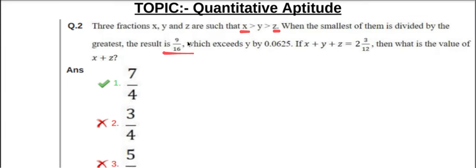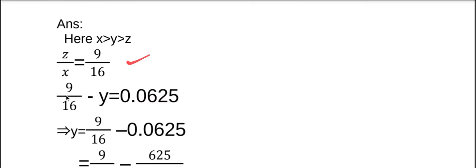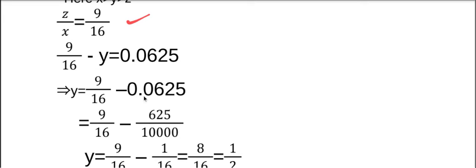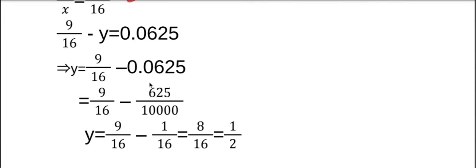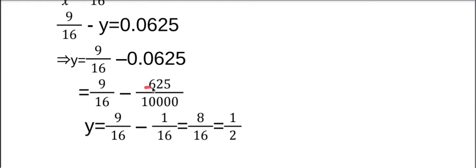9 by 16 exceeds y by 0.0625. Therefore 9 by 16 minus y equals 0.0625, which implies y equals 9 by 16 minus 0.0625. Omitting the decimal point, 0.0625 equals 625 by 10000. Simplifying by dividing 625 by 25 gives 25.